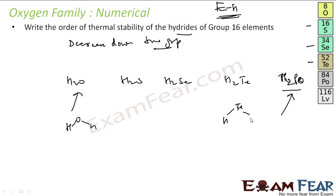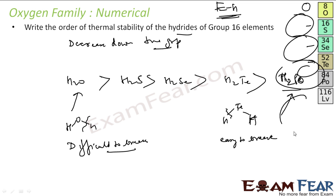Let's take this Te. It is easy to break this bond. Easy to break. So if you go down the group, since it is easy to break the bond, the thermal stability also decreases down the group. So I can say that water is more stable, H2S is again less, H2Se is all the more less, H2Te is all the more less, and H2Po is unstable.